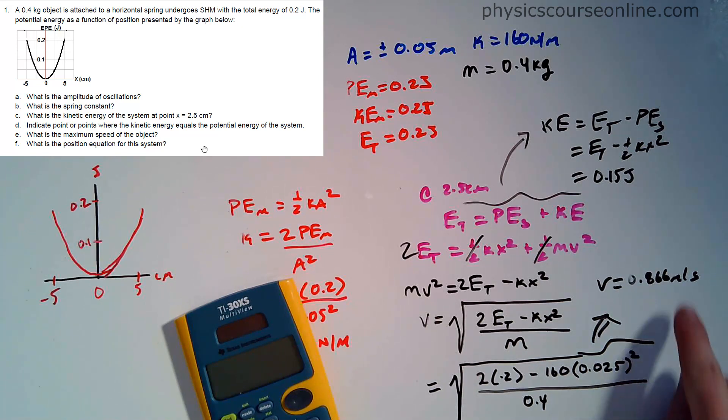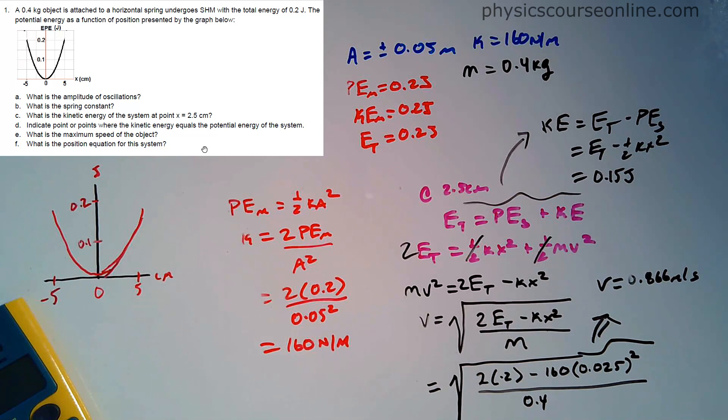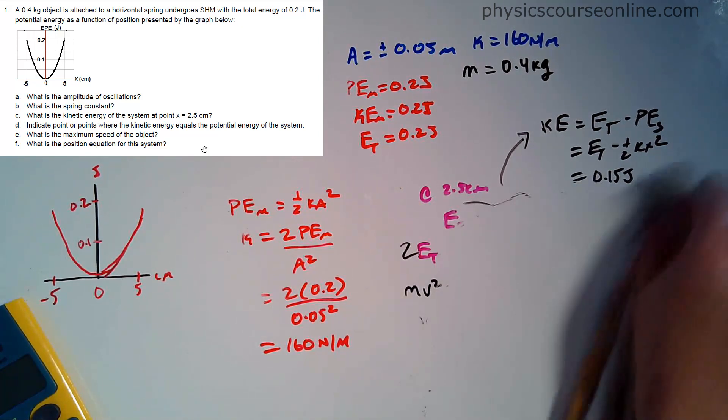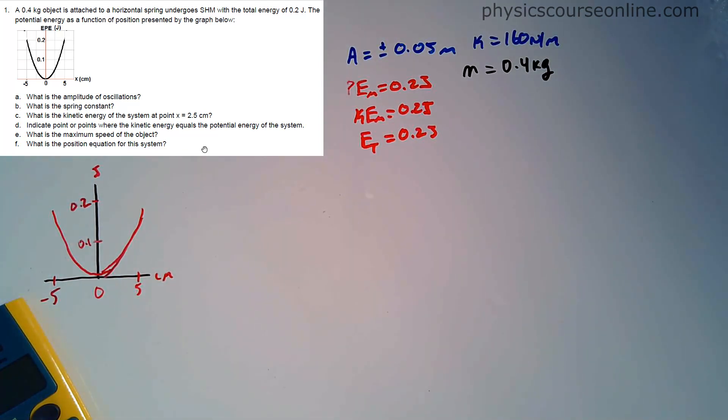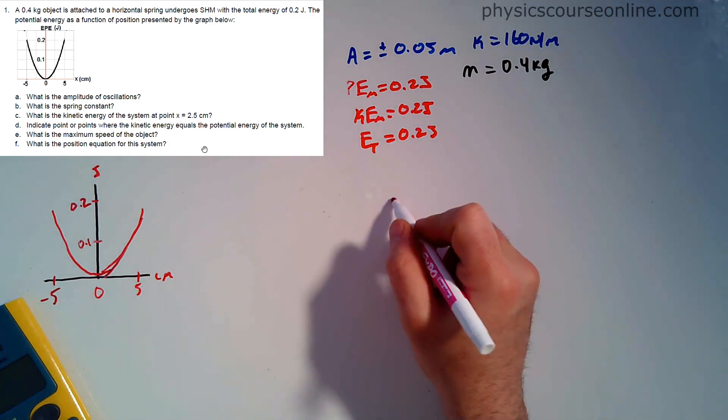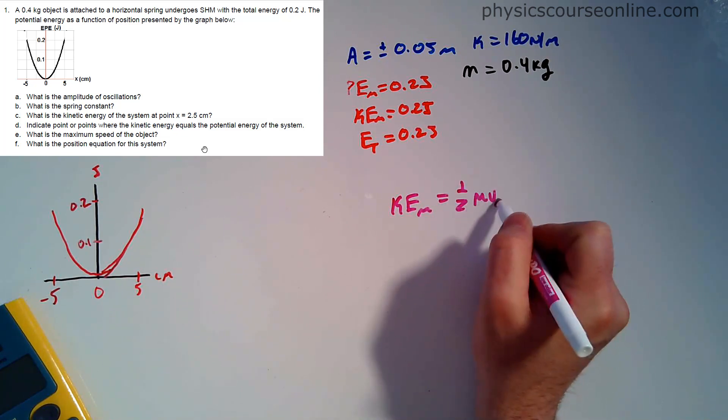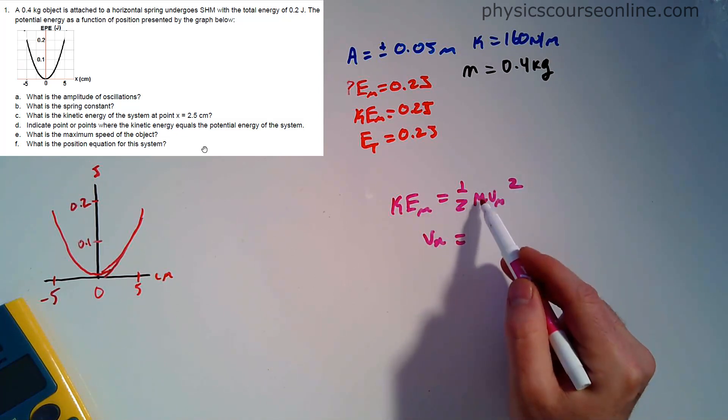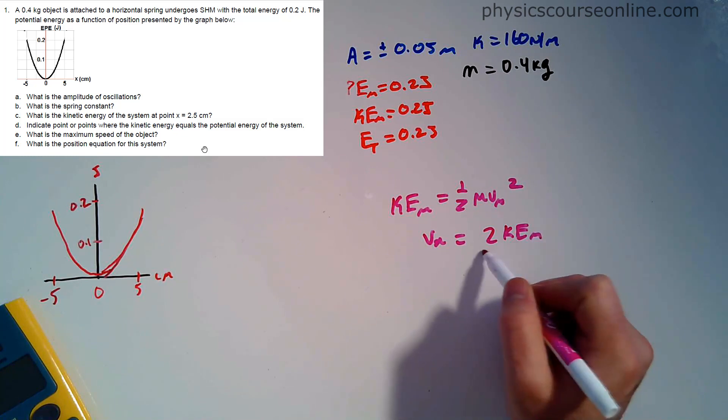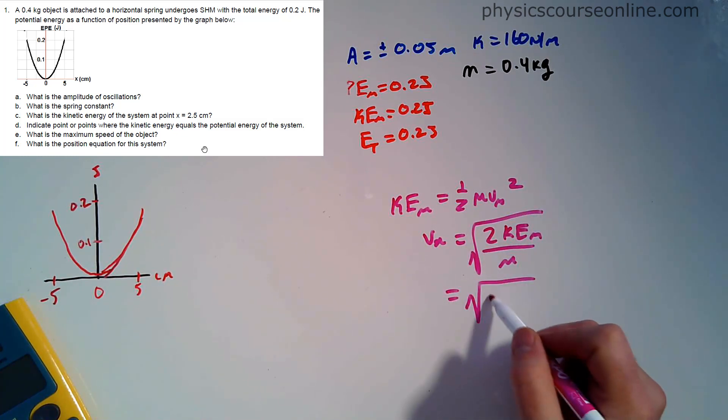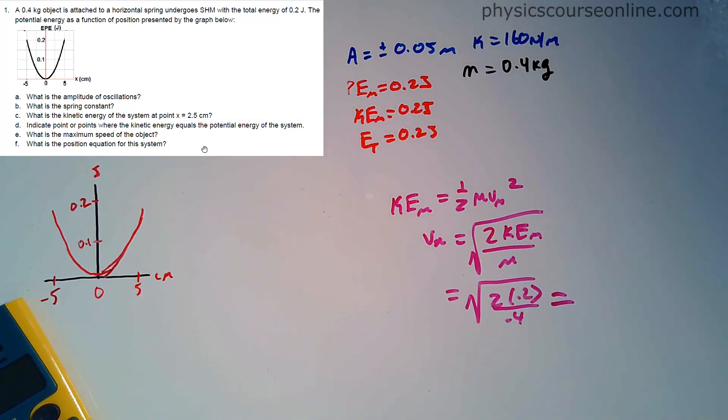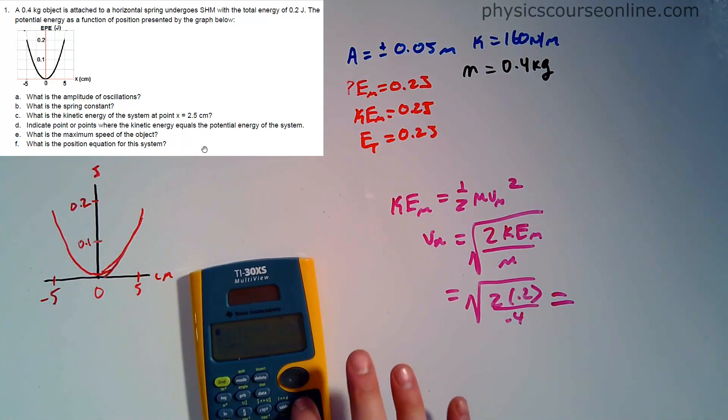Part E, what is the maximum speed of the object? The maximum speed is going to be where the kinetic energy is max. KE max is 0.2, so that's one half m v max squared. V max is therefore multiplied by two, divide by m, and then square root it. So we're going to have two KE max divided by the mass and then we're rooting that whole thing. Two times 0.2 divided by 0.4, root it all, and we're going to get one meter per second is the maximum speed.